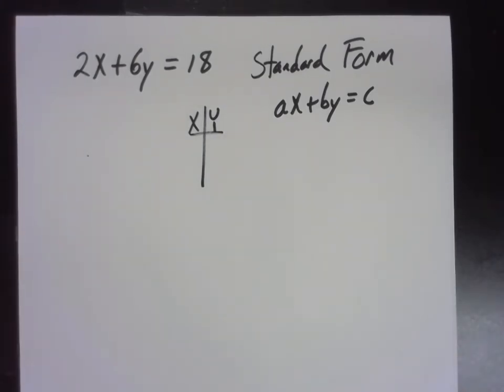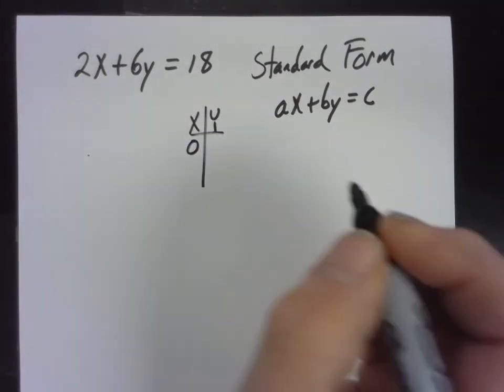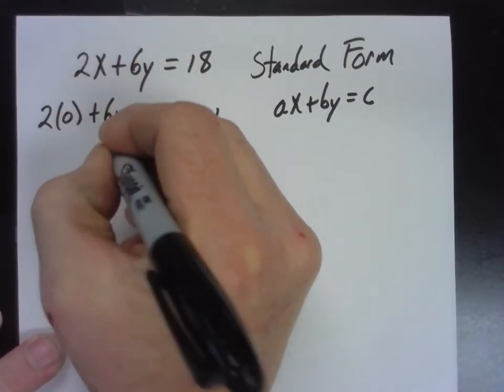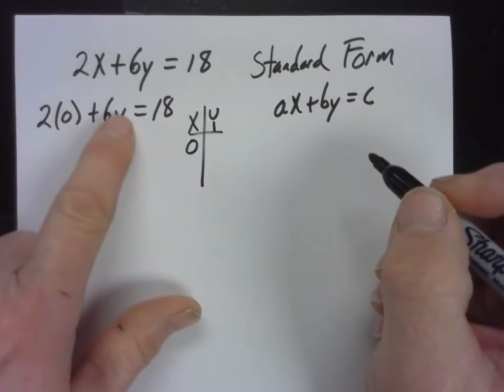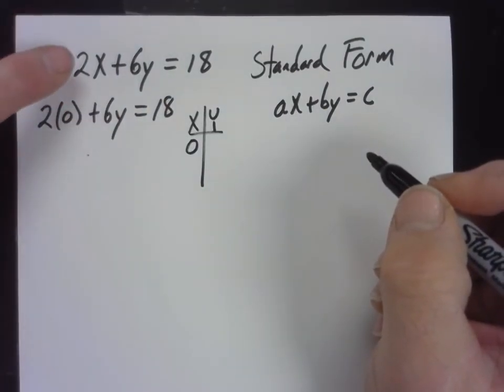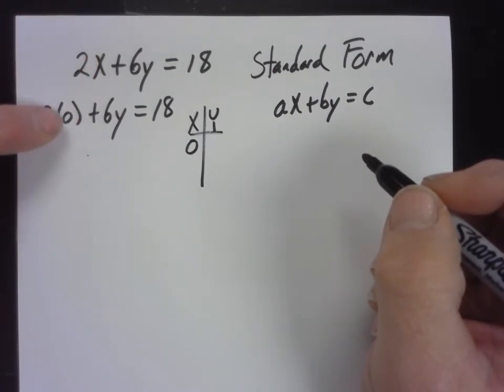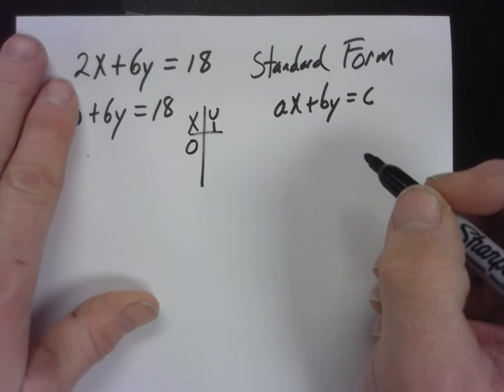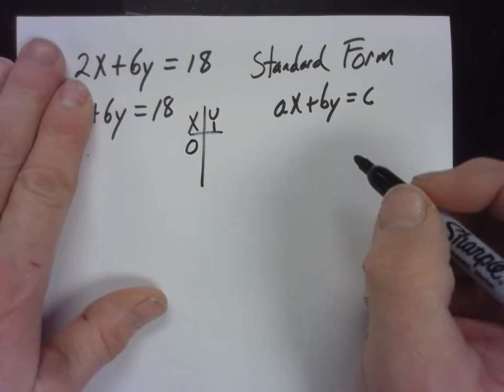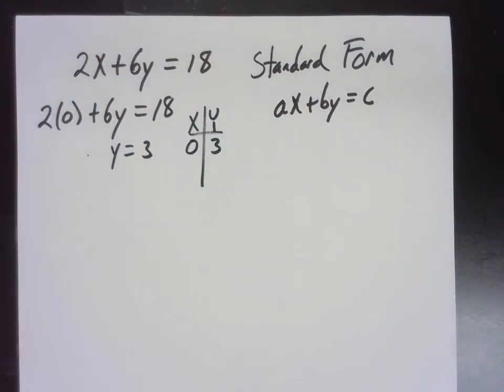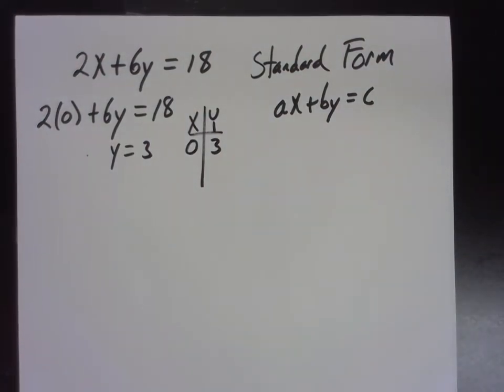Now, think lazy. What do you want to do first? Put zero in where X is. Two times zero plus six times Y equals 18. Do you notice when you put zero in where X is, basically that term just disappears? See how it's just zero? So, six Y equals 18. What does Y equal? There's a point. We're halfway home. We've got to find one more point.